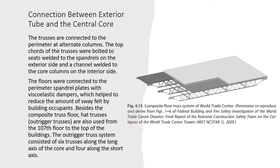Beside the composite truss floor, hat trusses or outriggered trusses are also used from the 107th floor to the top of the buildings. The outriggered truss system consists of six trusses along the long axis of the core and four along the short axis.